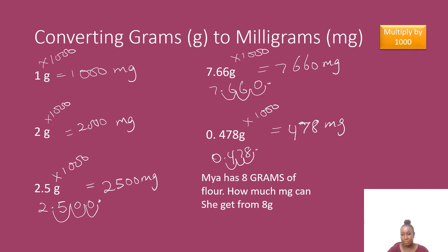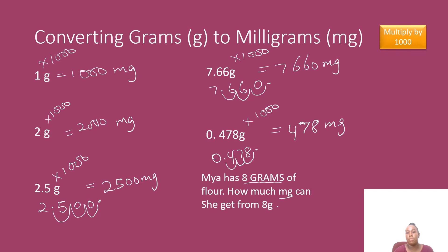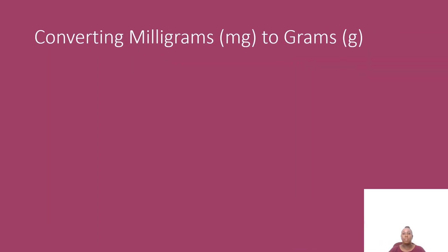Maya has 8 grams of flour — how many milligrams can she get from 8 grams? This question is simply asking us to change 8 grams to milligrams. When I'm converting from a big unit to a smaller unit, I multiply by a thousand. So to know how many milligrams we can get from 8 grams, we multiply by 1000 and we will get 8000 milligrams.